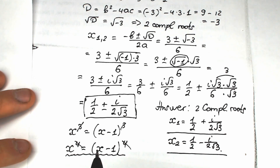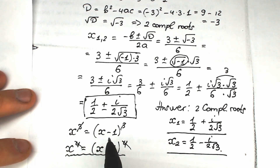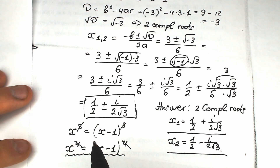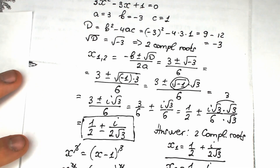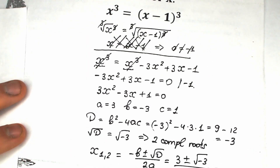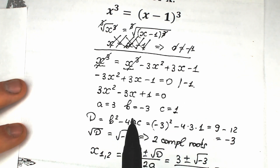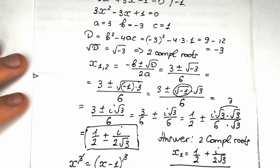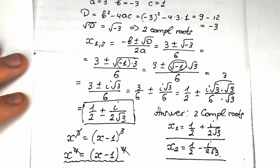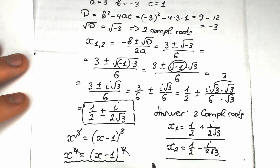This is a very important challenge in terms of math because a lot of students argue about the solution. The correct approach is to expand the right side and find the roots properly. A similar tricky challenge is x to the fourth equals x minus one to the fourth — students incorrectly cancel both exponents on both sides, which is wrong. I have a video about that challenge on my YouTube channel as well.